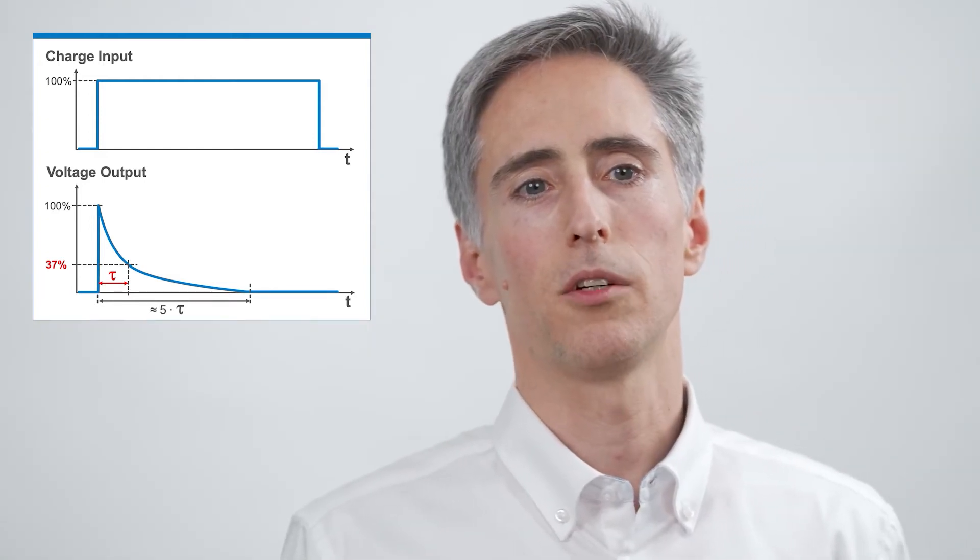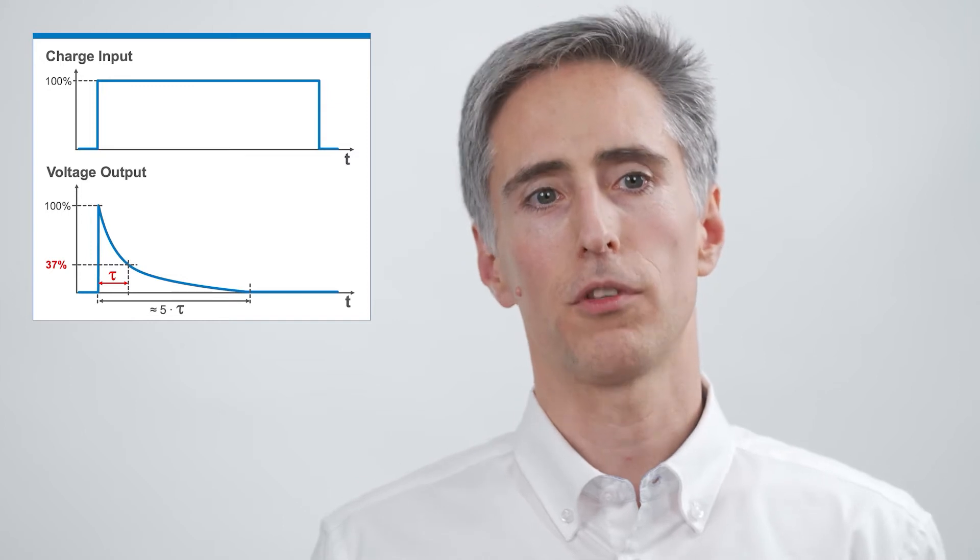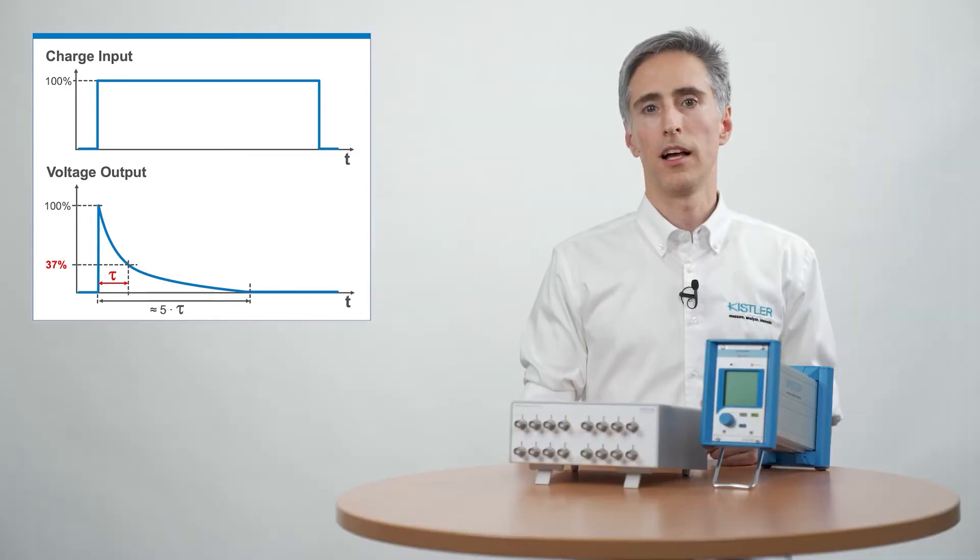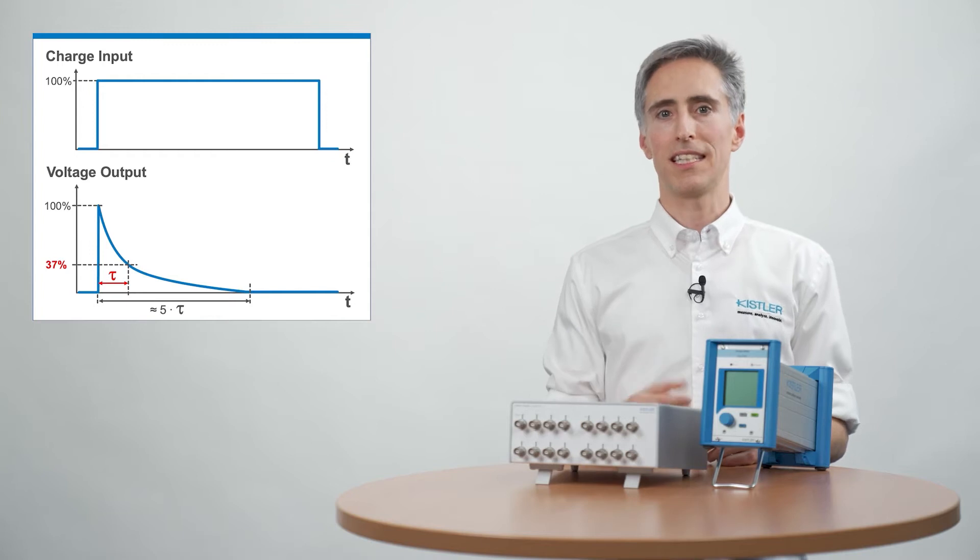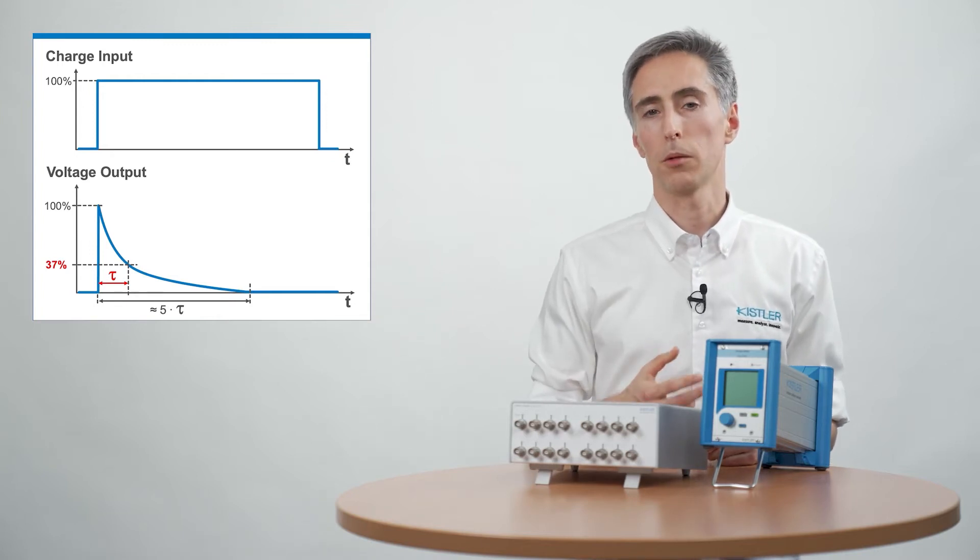After the time constant value, we only have 37% of the original signal left. After about 5 times the time constant, DC content is almost filtered away completely.